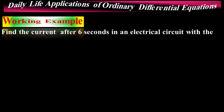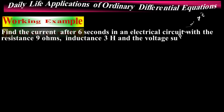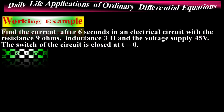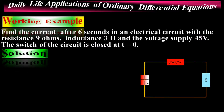Find the current after six seconds in an electrical circuit with resistance 9 ohms, inductance 3 Henry, and voltage supply 45 volts. The switch of the circuit is closed at t equals zero. This is one of the applications of ordinary differential equations in the electrical field.